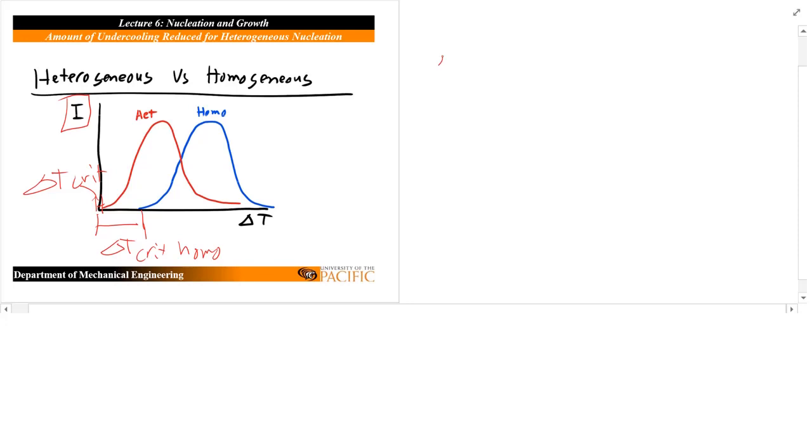Why is that? Because delta T is your driving force to nucleate, that is the amount of undercooling, the amount of low temperature required to basically shift from liquid to solid. So if that value, if we're having to create less area, we're going to need less driving force in order to nucleate those particles.